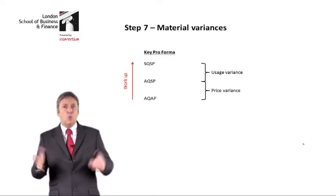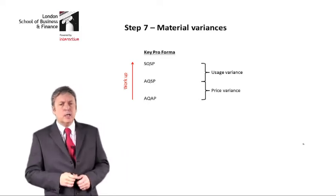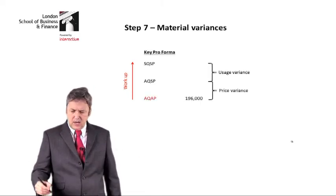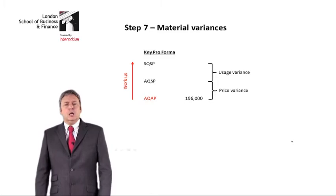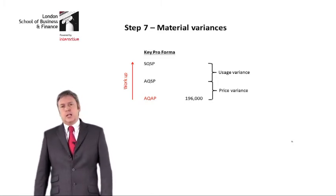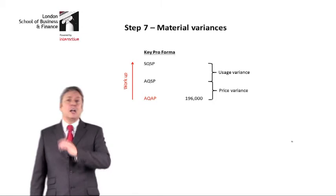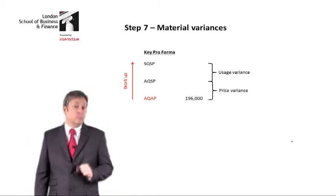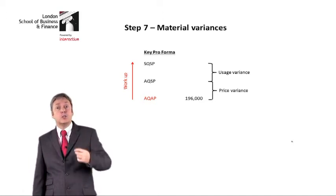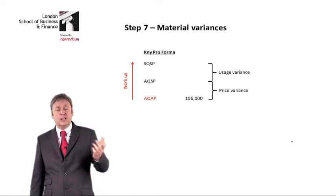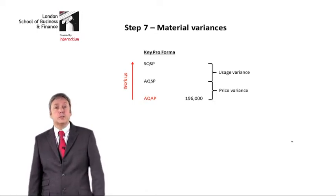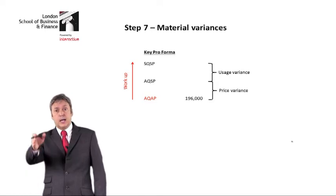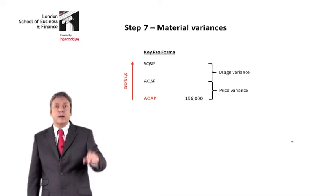I've written here 'work up', because the way I do it is I work from the bottom to the top. You don't have to do it that way — I just think it's the best way. So we start with actual quantity, actual price. If you take the actual quantity in kilos multiplied by the actual price in dollars, that means you will end up with the total actual cost. And that should be given somewhere — in this case it was given as 196,000. Actual multiplied by actual will give you total actual cost.